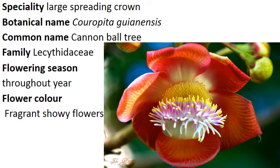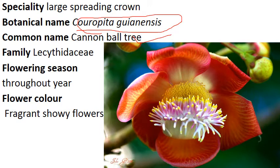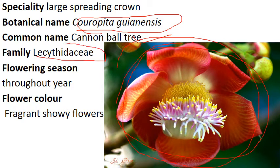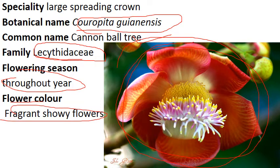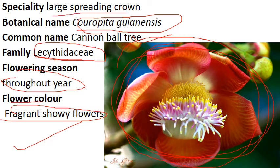Next one: Cannonball tree. Botanical name is Couroupita guianensis. If you get a chance you should watch this tree, because it has a very interesting feature — balls are present on the trunk of the tree, and the flower is very attractive with a very high, fragrant smell. Family is Lecythidaceae. Some more genera you should remember that come under Lecythidaceae: Lecythis, Barringtonia acutangula, and Gustavia. Flowering season is throughout the year. In some places of India, people believe that this flower is used for the worship of Lord Shiva. It also has a large spreading crown.